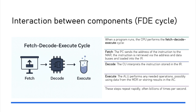The control unit interprets the instruction by looking it up in an instruction table — identifying whether it needs to add, divide, subtract, and so on. The interpretation of that instruction happens between the control unit and the instruction register. Finally, execution occurs: the ALU performs any needed operations, possibly using data from the MDR or storing results in the accumulator. The result is stored in the accumulator and eventually transferred back into RAM, and these steps are repeated rapidly — often billions of times per second.